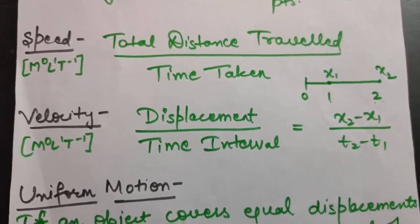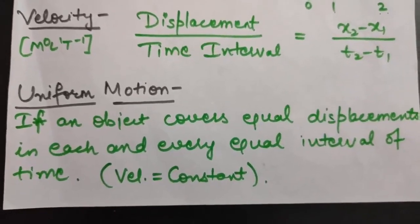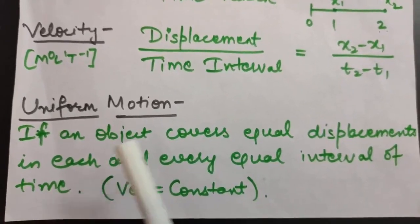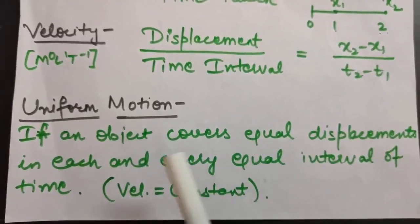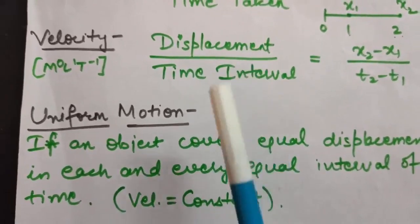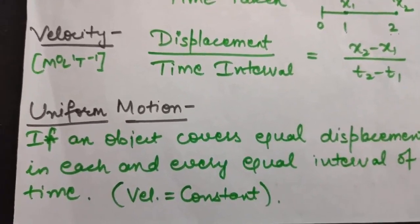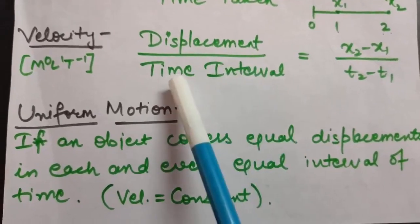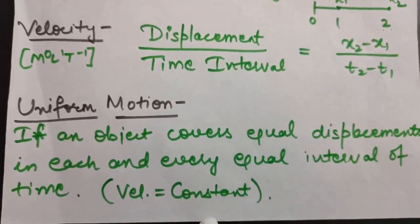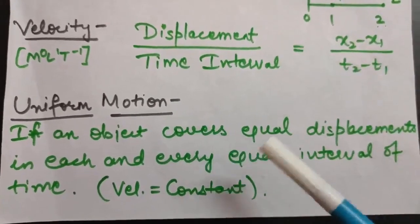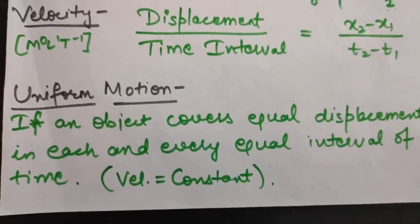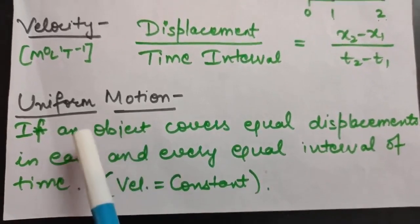If an object covers equal displacements in each and every equal interval of time, the motion is said to be uniform motion. Since displacement and time interval are the same at every point, velocity will remain constant for uniform motion.